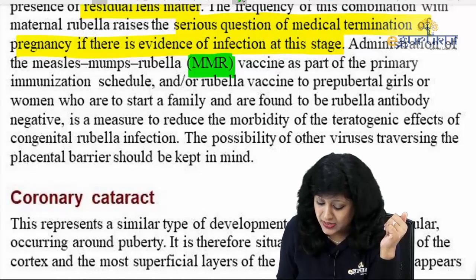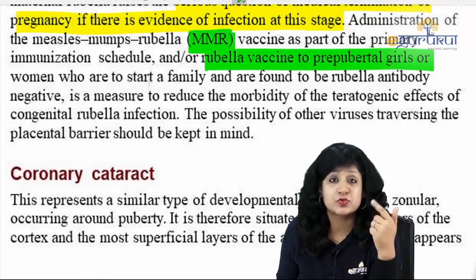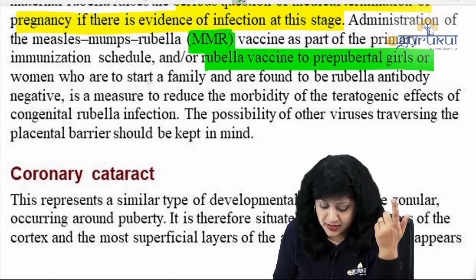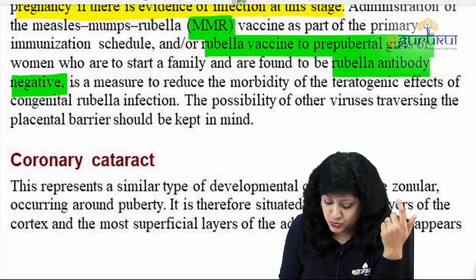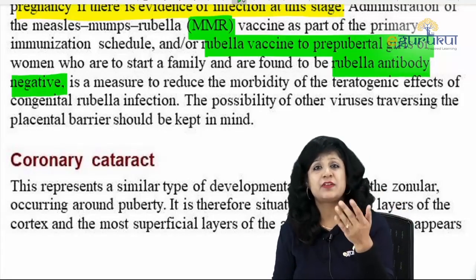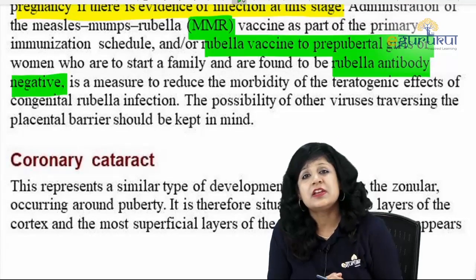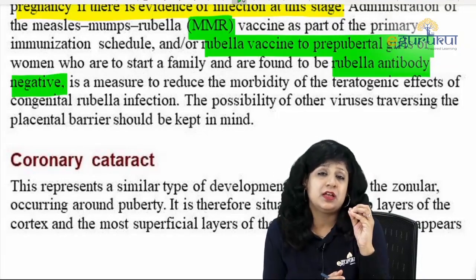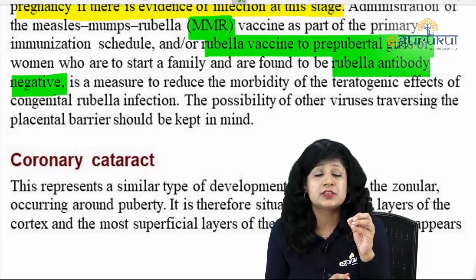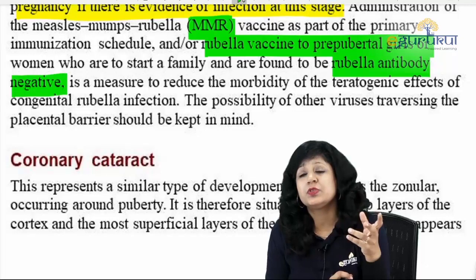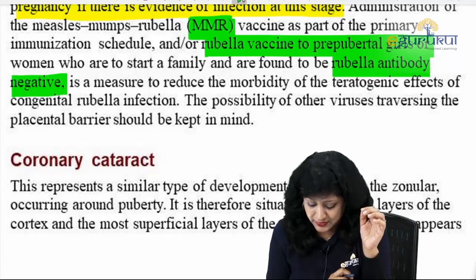Administration of the MMR vaccine (mumps, measles, rubella) as part of the primary immunization schedule, or rubella vaccine given to adolescent females who are rubella antibody negative, is a measure to reduce morbidity. This is why we immunize adolescent females — so that by the time they reach reproductive age they are already immunized against rubella. The possibility of other viruses should also be kept in mind.